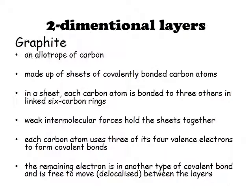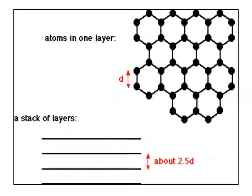Graphite is made of sheets of covalently bonded carbon atoms. In each sheet, each carbon atom is bonded to three other carbon atoms, and there are weak intermolecular forces holding the sheets together. Each carbon atom uses three of its four valence electrons to form covalent bonds in the layers, leaving one free electron. This remaining electron is delocalized and is able to move around between the layers, which means graphite can conduct electricity.